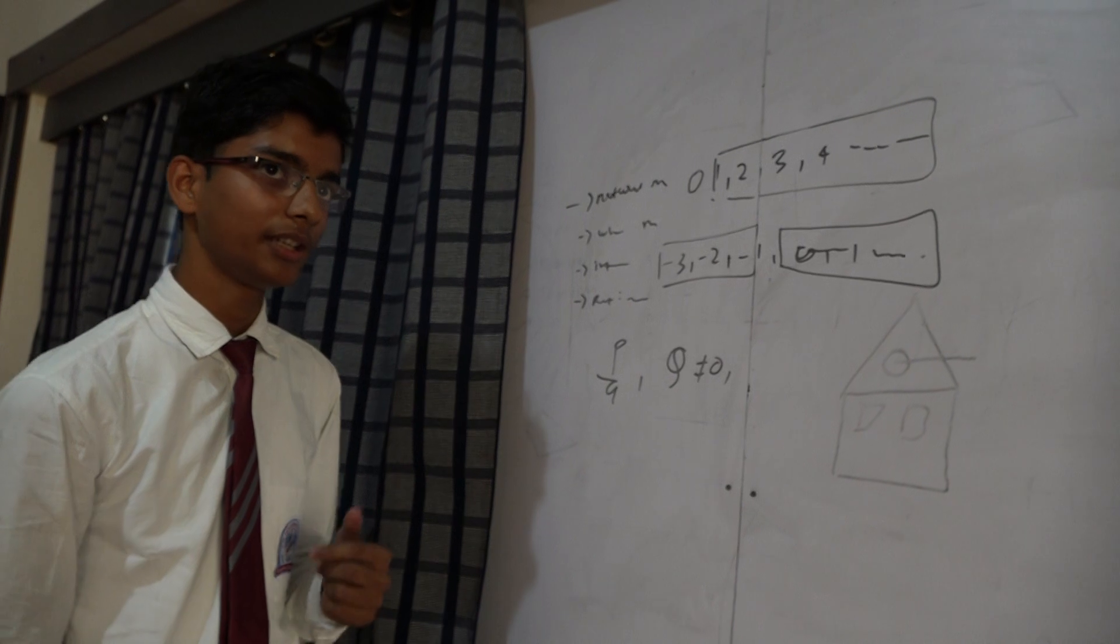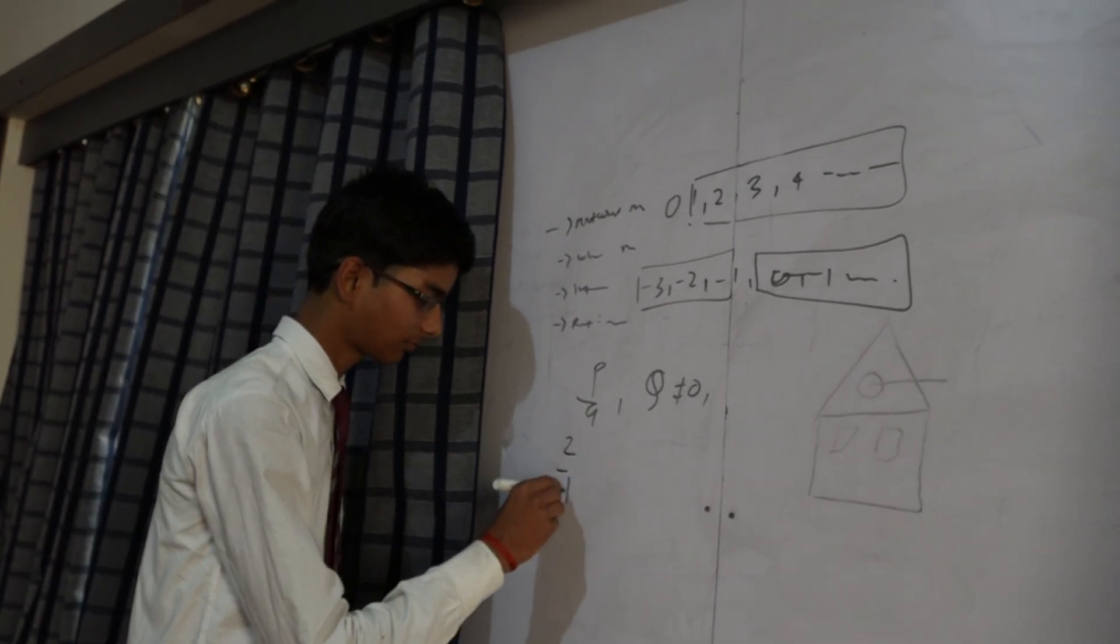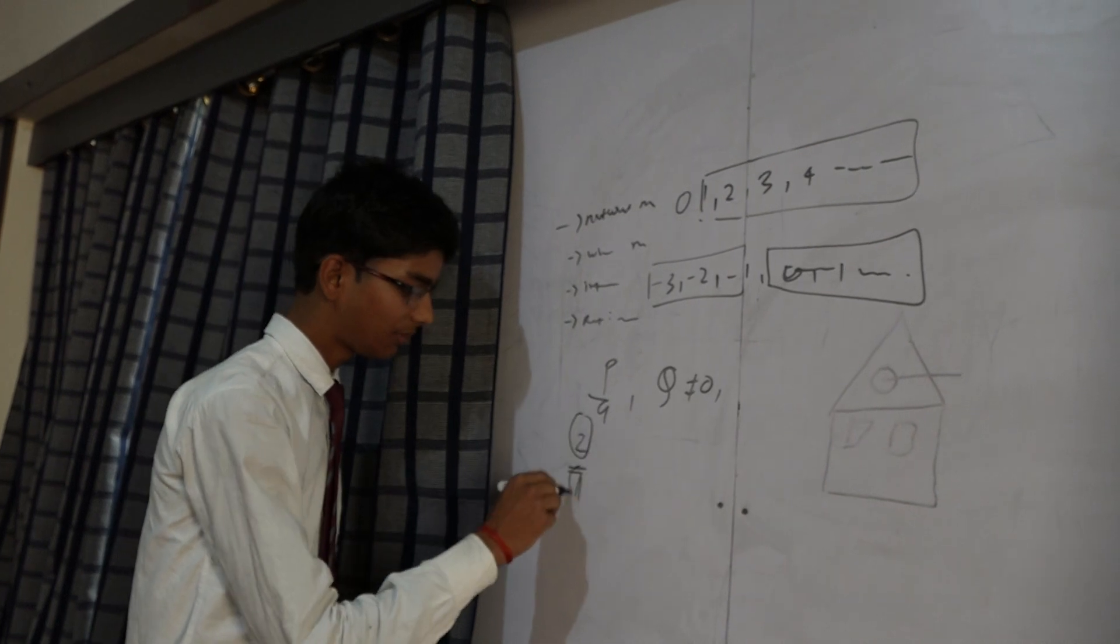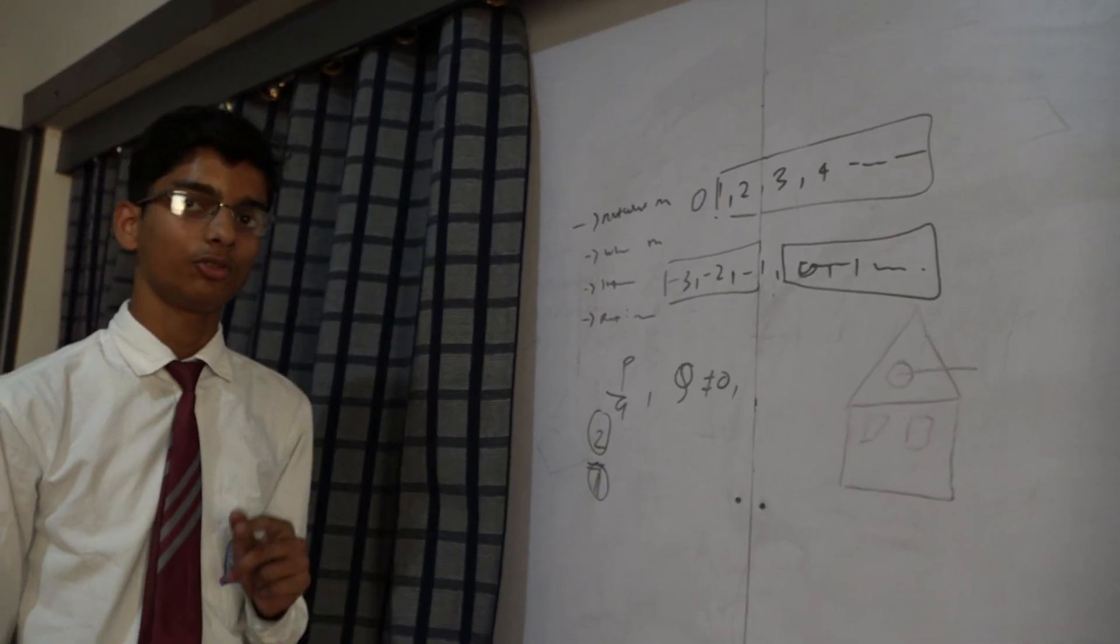For example, we take 2 by 7. 2 by 7 is form of p by q. p by q means where numerator and denominator.